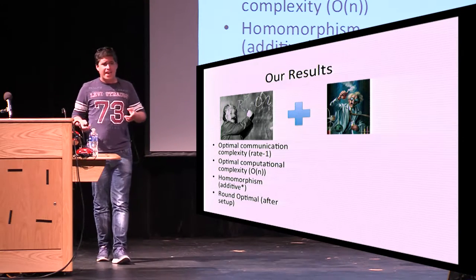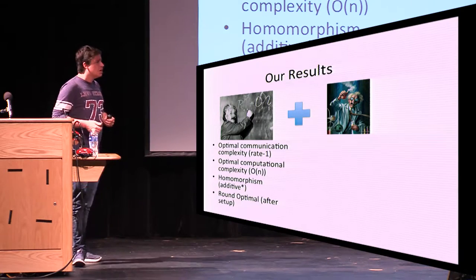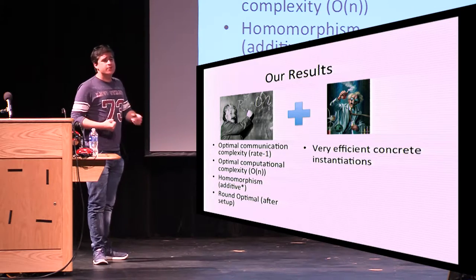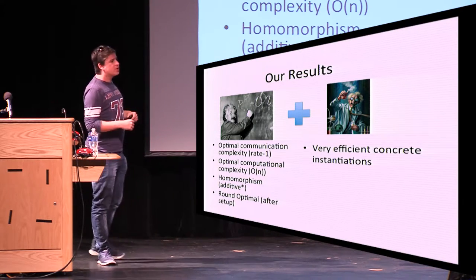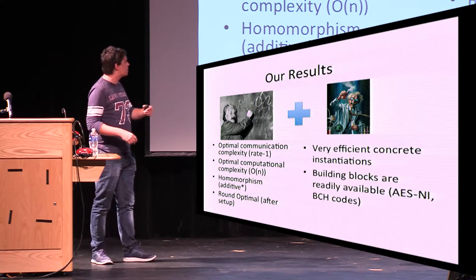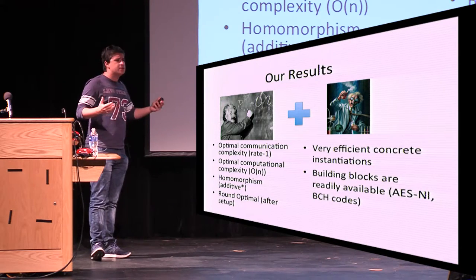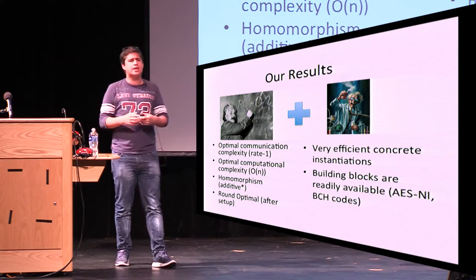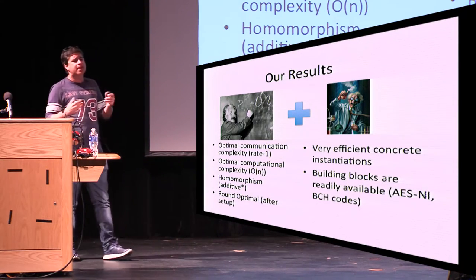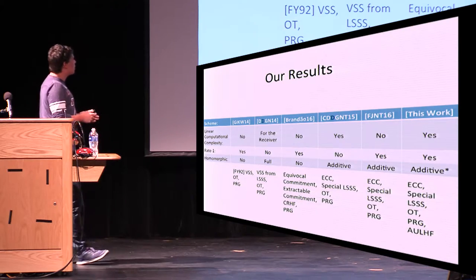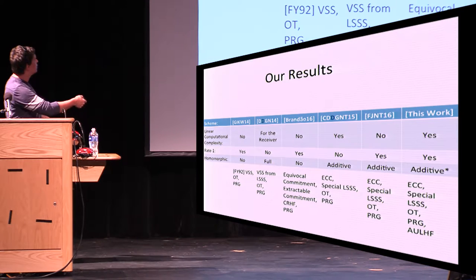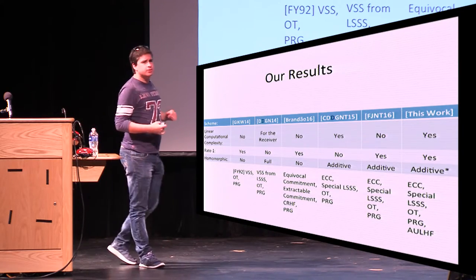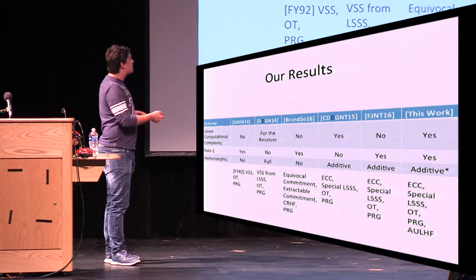So that's one of the open problems I'm going to talk about later. We also round optimal after the setup phase, after the initial OTs, the sender only needs one round to commit and one round to open. So that's also nice. Now on the practical side, you can actually implement—I mean, if you read the title, it's a very theoretical paper, but you can actually implement that very efficiently. I'm going to talk more about that later, and the building blocks are readily available. We can use any PRGs based on AES and so on, and the actual error correcting codes that you can use to implement this efficiently, although without the asymptotic properties are readily available, for example, in the Linux kernel.